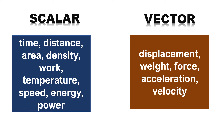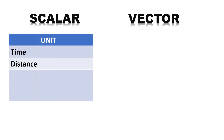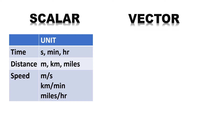From here, we will discuss further those quantities related to our next topic. In scalar quantity, we will discuss more examples of time, distance, and speed. Units for time are seconds, minutes, and hours. For distance, we have meter, kilometer, and miles. Units for speed are meters per second, kilometers per minute, or miles per hour.